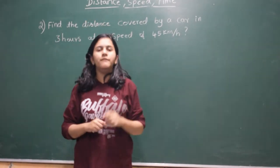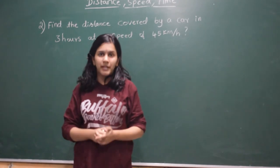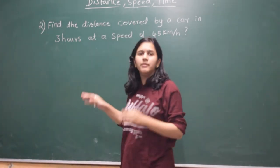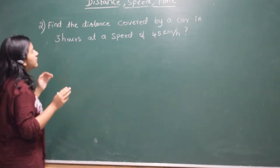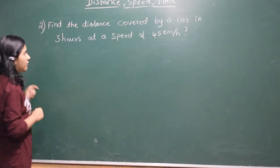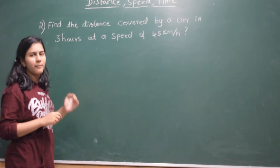In that problem we solved a problem based on speed. So now we will solve a problem based on distance. The question is: find the distance covered by a car in 3 hours at a speed of 45 km per hour.